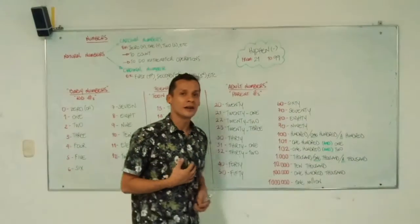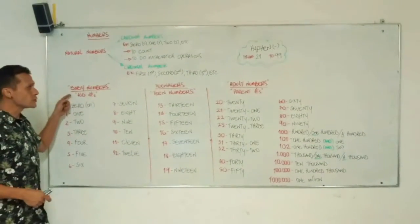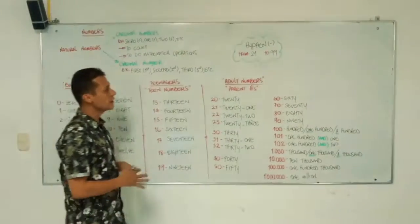Personally, I like to divide numbers into three big groups: baby numbers or kid numbers, teen numbers, and other numbers.